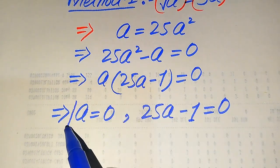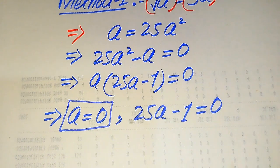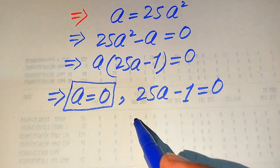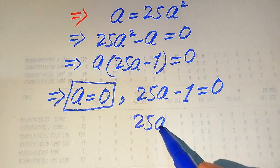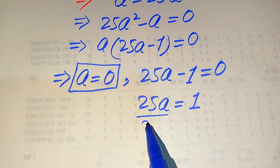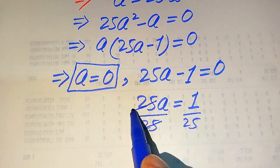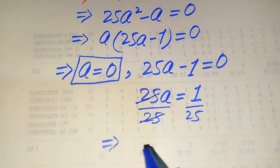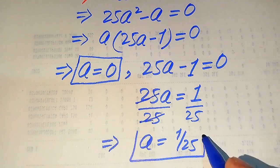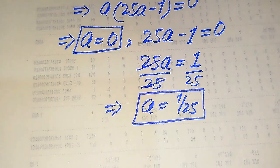The first root is a equals 0. To find the second root, we move minus 1 to the right-hand side and get 25a equals 1. Dividing both sides by 25, the 25 cancels and we get a equals 1 over 25. So these are the two values of a from this method.